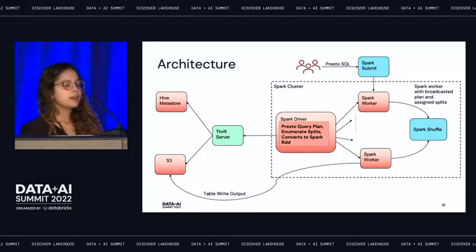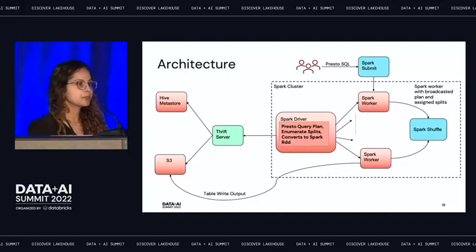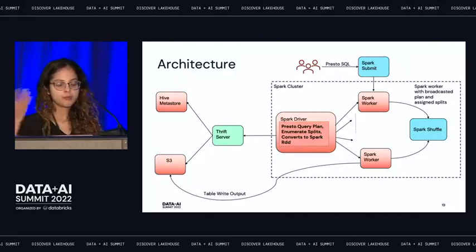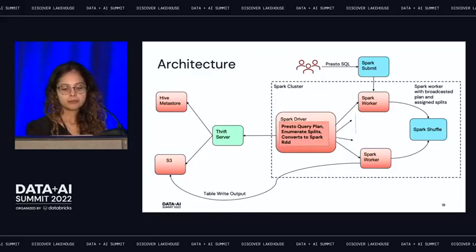It also leverages Spark's cluster manager and elastic compute for better resource management. Now, if you're running on cloud using Presto on Spark, you can practically throw more compute at complex queries and those queries will perform well, and you can reduce compute for small queries — optimizing on both performance and cost.